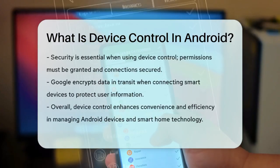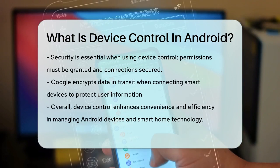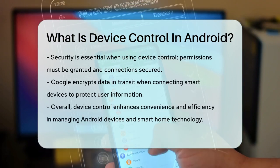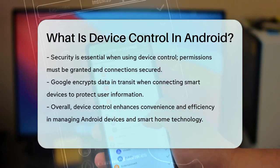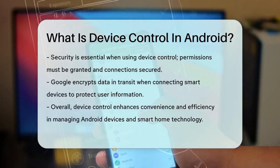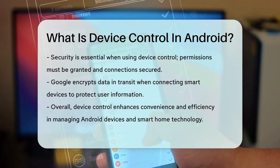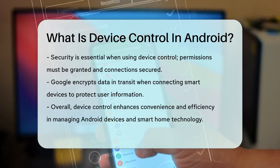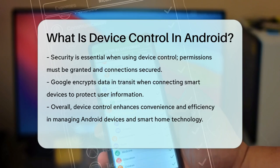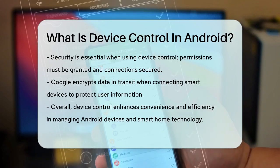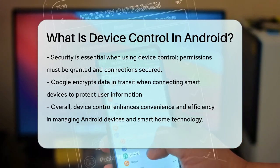In terms of security, it's important to be vigilant. When using device control, you need to grant the necessary permissions and ensure that your connections are secure. Google, for example, collects certain information to connect you with your smart devices, but this data is encrypted in transit to maintain security.